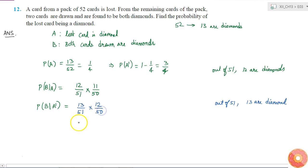Both drawn cards are found to be diamonds, so we have to find the probability of the lost card being a diamond. That means probability of A given B.